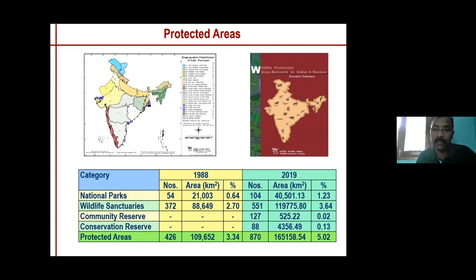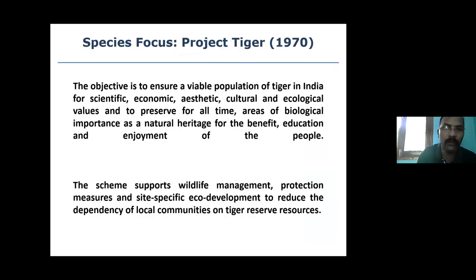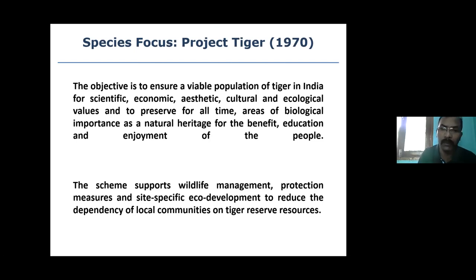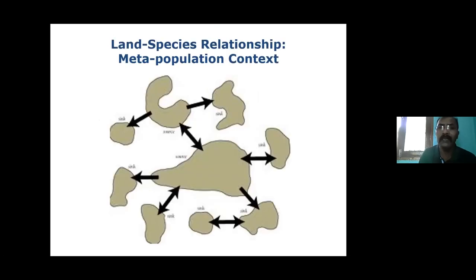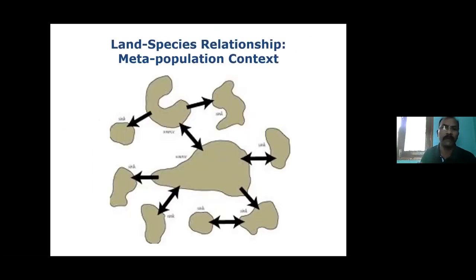Starting from 1988 to 2019 and updated to 2021, India now has about 870 protected areas in total, protecting 5 percent of the geographic area. Initially the approach was land-focused — the Man and Biosphere concept with core, buffer, and transition zones. Then we moved to a species-focused approach with Project Tiger, which focused on one umbrella species that would benefit a broader species community. India's mainland conservation is largely driven by tiger, and this has contributed tremendously.